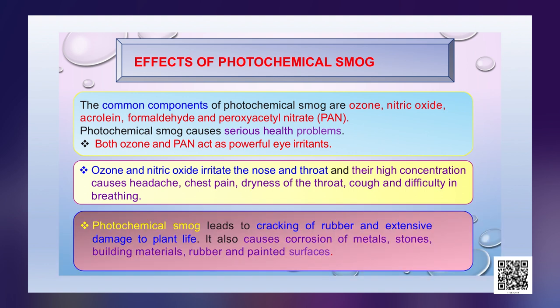The photochemical smog can lead to cracking of rubber and can also cause extensive damage to plant life. It also causes corrosion of metals, stones, building materials, rubber and painted surfaces.